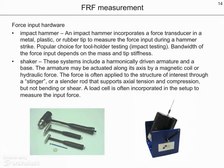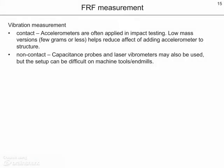The second mechanism is a shaker. In this case, an armature is attached to the structure of interest through a stinger or slender rod, and the motion of the armature imparts a force to the structure. A load cell is incorporated in order to measure the input force. In order to record the vibration response, two main methods are used. Accelerometers are the most common choice — a contact type transducer attached to the structure at the point of interest. For accelerometers, we would like the mass to be small so that it doesn't affect the structure being measured. Capacitance probes and laser vibrometers offer non-contact solutions, but their setup is more complicated.